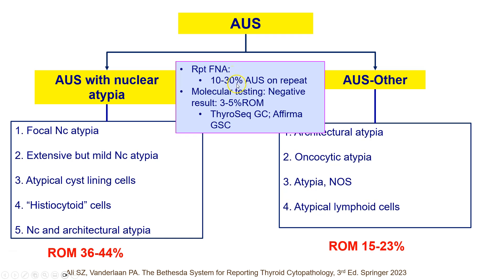For management, usually it is repeat FNA. A percentage of these cases will be AUS again on repeat FNA, after which excision or lobectomy may be recommended. These cases can also benefit from molecular testing, where a negative result — meaning absence of malignancy — usually has a very high negative predictive value, indicating a very low risk of malignancy, so patients can be managed conservatively and followed up.